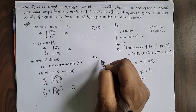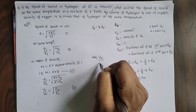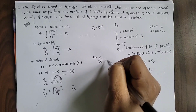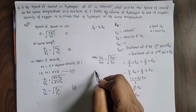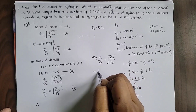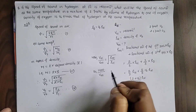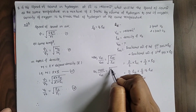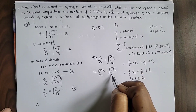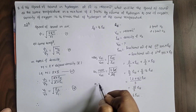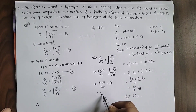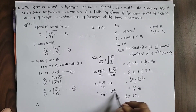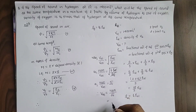The speed of sound in hydrogen divided by the velocity of sound in the mixture is equal to √(density of mixture / density of hydrogen). So 1400 / V_mix = √(6ρ_H / ρ_H) = √6. Therefore, the velocity of sound in the mixture is 1400 divided by √6, which equals approximately 571.54 meters per second.